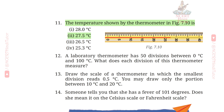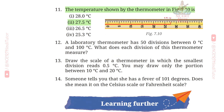Question 11: The temperature shown by the thermometer in Figure 7.10 is 27.5 degrees Celsius. The reading goes: 25, 25.5, 26, 27, and 27.5. Question 12: A laboratory thermometer has 50 divisions between 0 degrees Celsius and 100 degrees Celsius. What does each division measure?